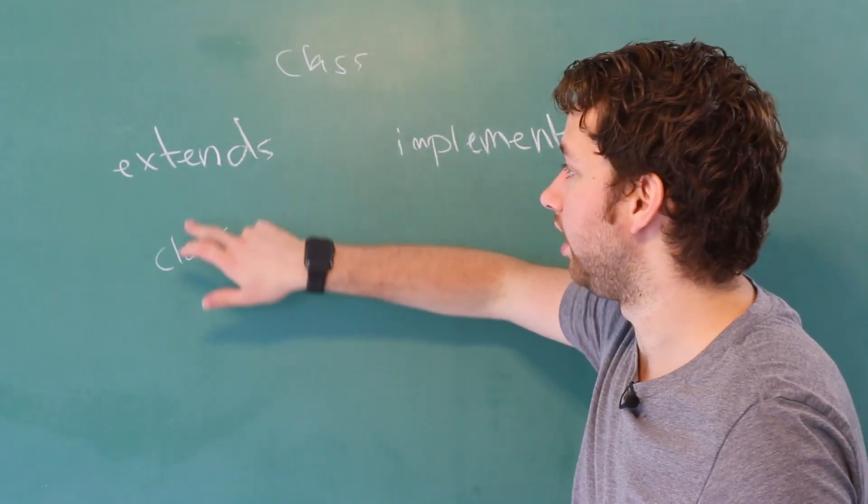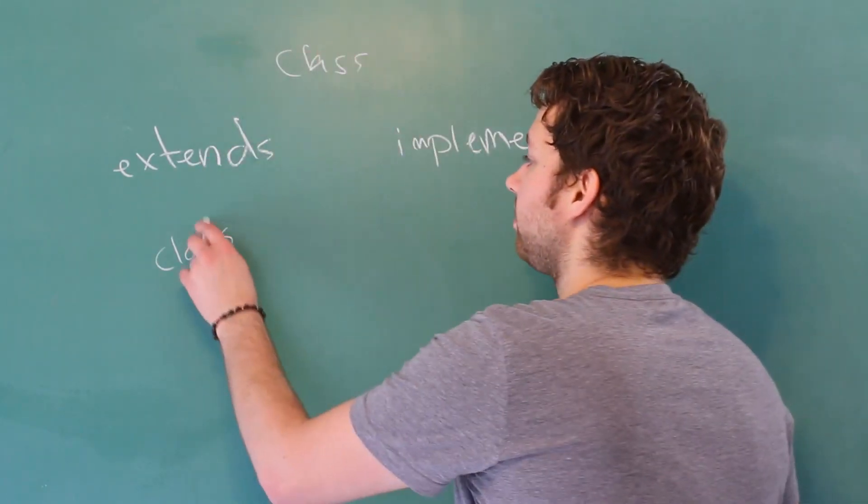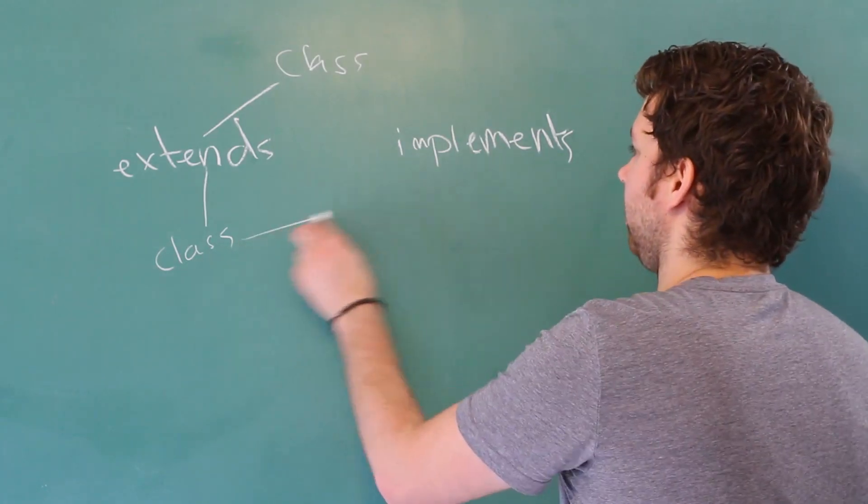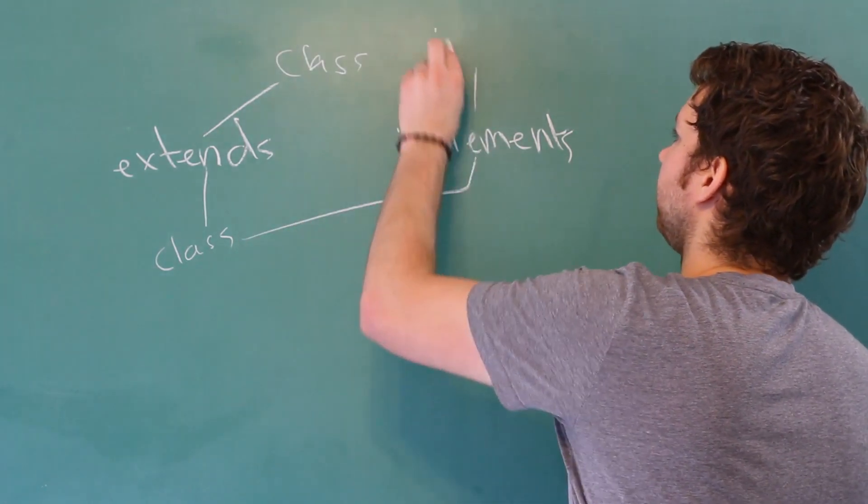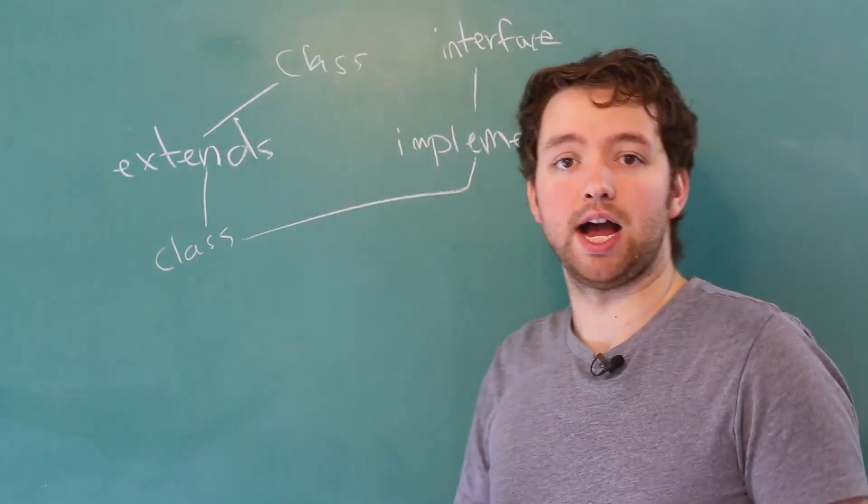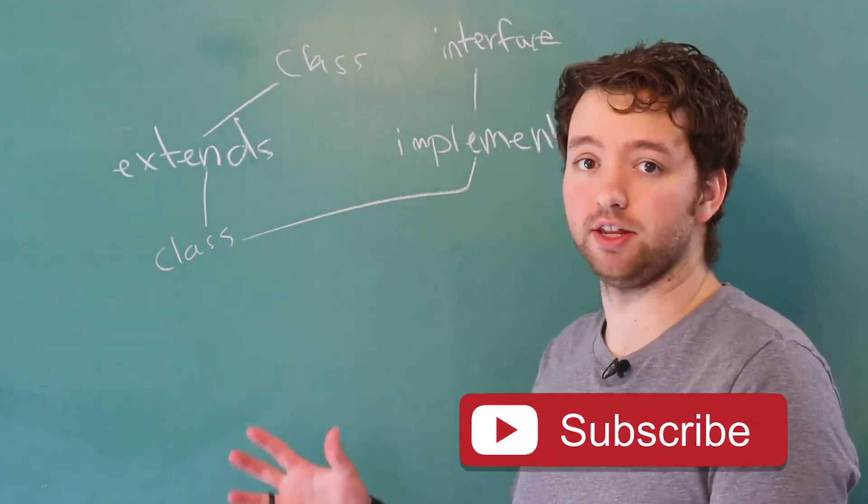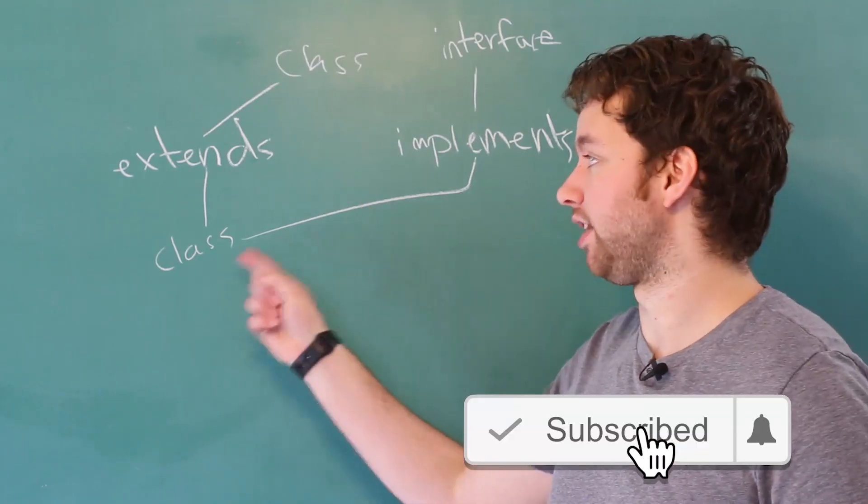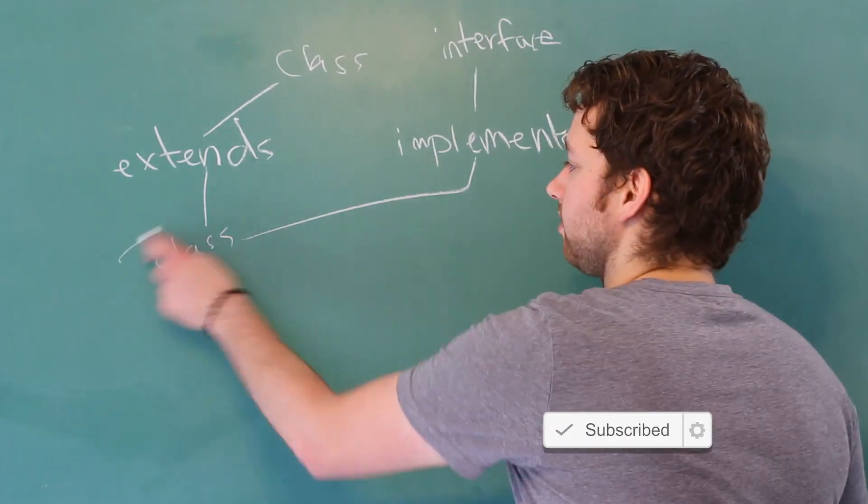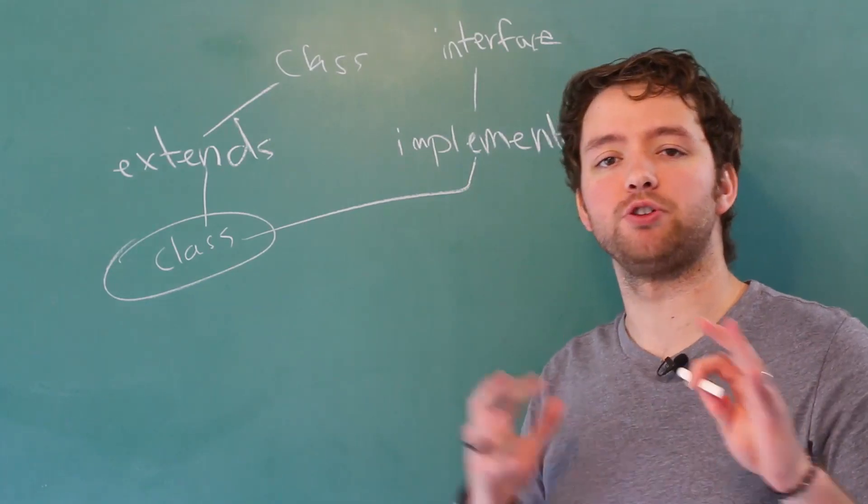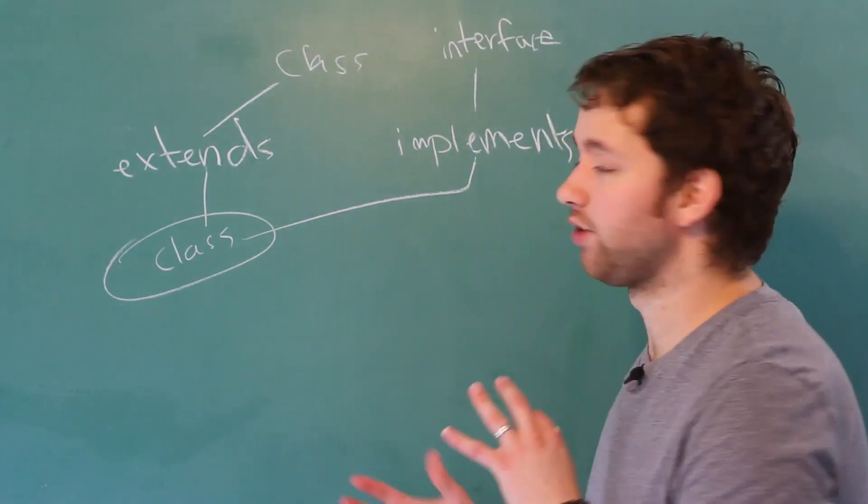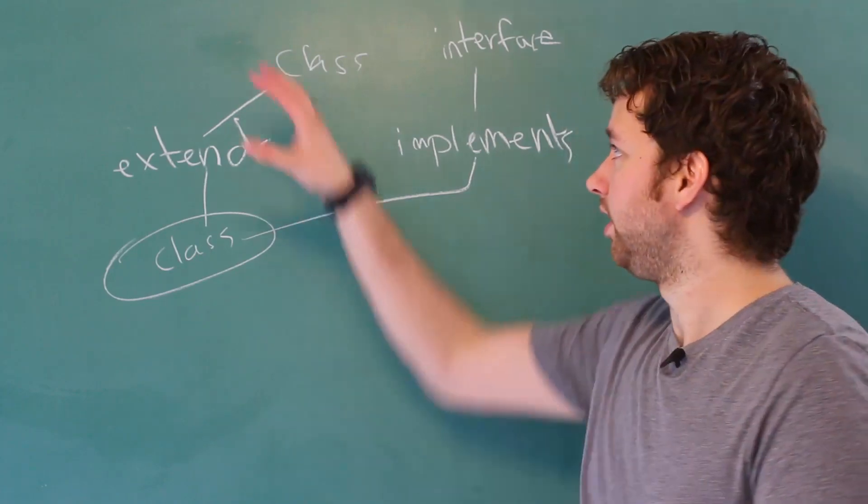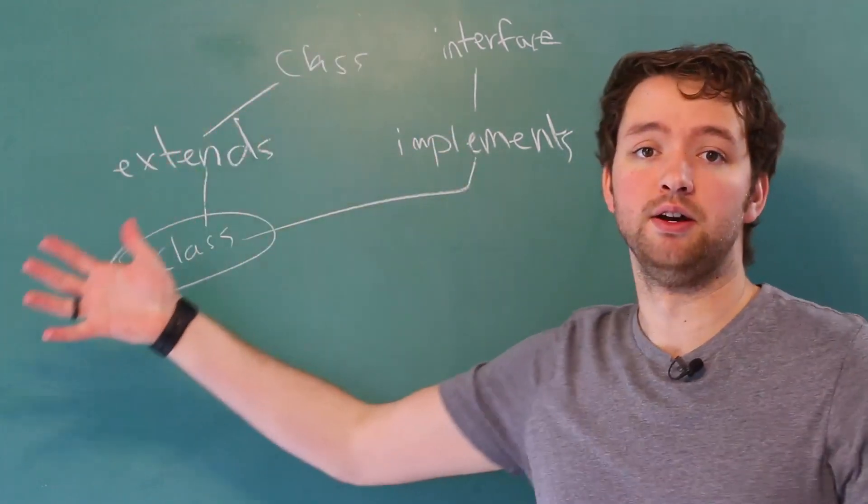So a class can extend another class, but a class doesn't extend an interface. Instead, it implements an interface. So a class inherits from another class and can have that code already there. But when a class implements an interface, you have to define that functionality in this class. So both are important. Just make sure you understand when to use which. If you're trying to define what something is, or you want that code to automatically already be done, it's going to inherit from another class.